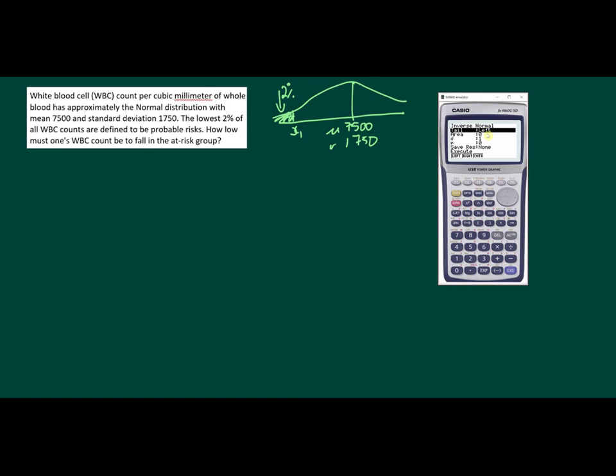We then go down to the area, and the area is 2%, so that as a decimal is 0.02. Don't forget to make sure you put 0.02 in this case. Common mistake for people to make an error at that point. Standard deviation is 1750, and the mean is 7500. Press execute.